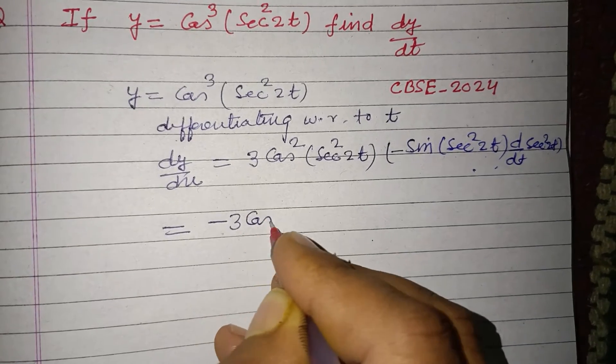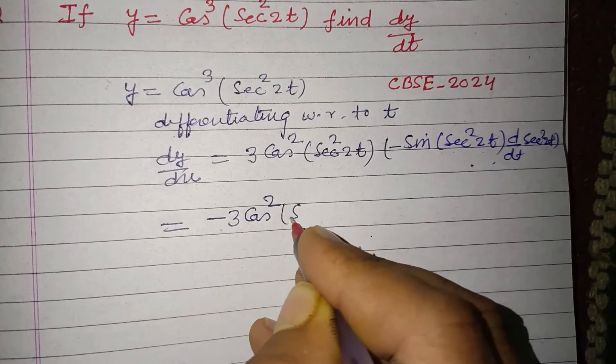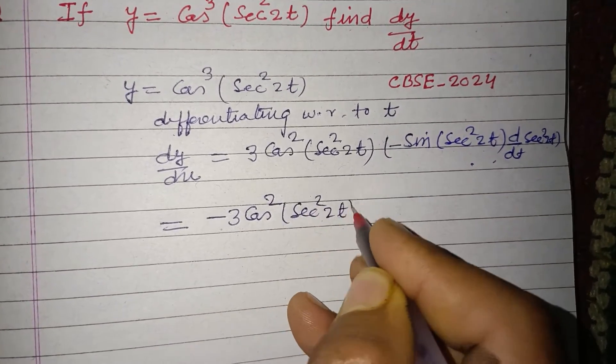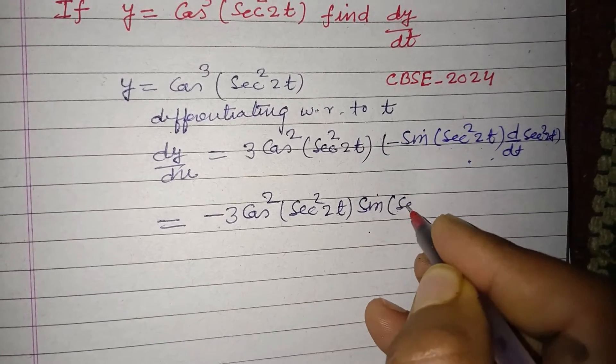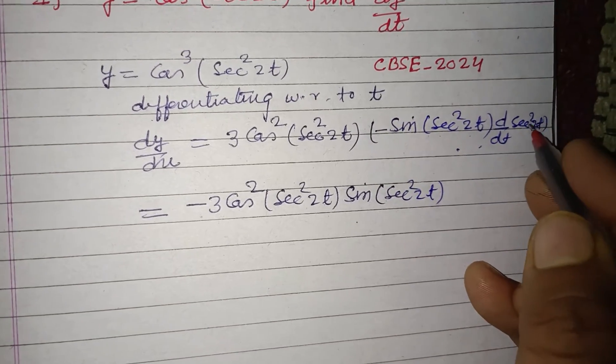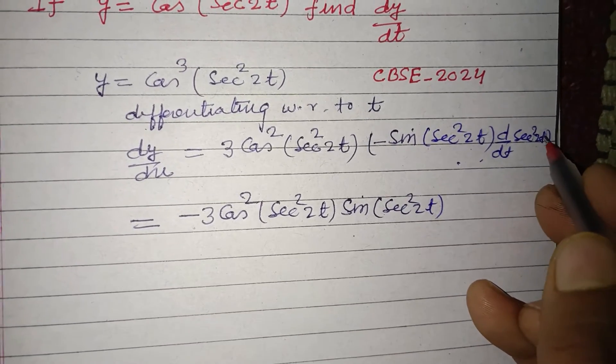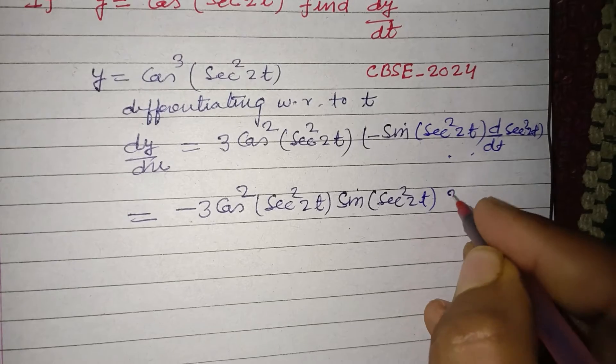Minus 3 cos²(sec²(2t)) into sine(sec²(2t)). Now differentiation of sec²(2t) is 2 sec(2t), and sec t is sec(2t) tan(2t). Now differentiation of 2t...